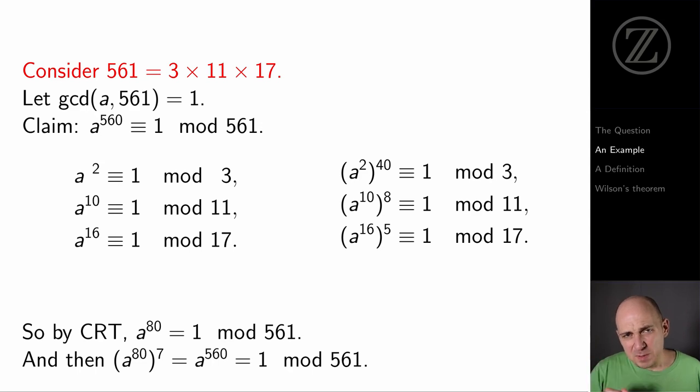To explore this, let's pick a number that's definitely not prime, like 561. That's 3 times 11 times 17. Now suppose I've got some number a which is relatively prime to 561, so a is not a multiple of 3 or 11 or 17. Now despite the fact that 561 isn't prime, it still satisfies the conclusion of Fermat's Little Theorem. We're going to show that a raised to the power of 560 is congruent to 1 modulo 561.